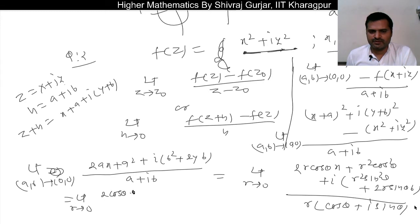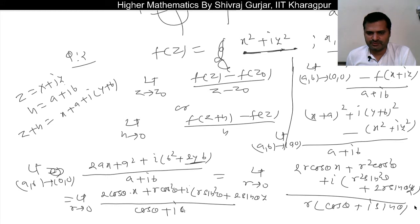So here we can see, limit r tends to 0, one r we can cancel that. So 2 cos θ · x + r cos² θ plus i(r sin² θ + 2 sin θ · y) divided by cos θ + i sin θ. Because r cancels and r tends to 0, so this term becomes 0, this term becomes 0. So we have [2 cos θ · x + 2i sin θ · y]/(cos θ + i sin θ). Okay, so this value.